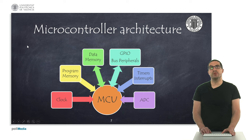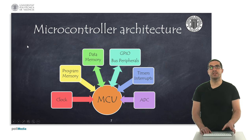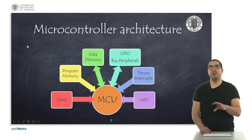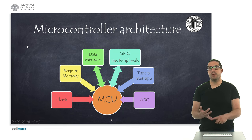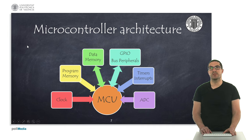This is the architecture we usually find in many microcontrollers. The main piece is the MCU — the microcontroller unit — which is the brain of the microcontroller. Around it we have different peripherals and memories: the clock, which signals how to run instructions; the program memory and data memory we described; the GPIO — general purpose input/outputs — where we have digital inputs, outputs, and analog inputs; and also special signals like timers, interrupts, and analog-to-digital converters.